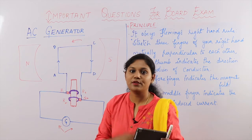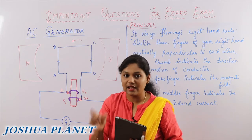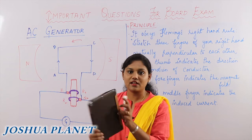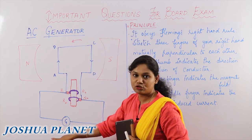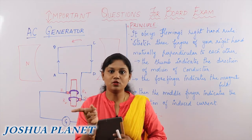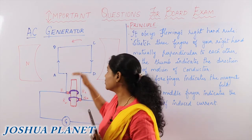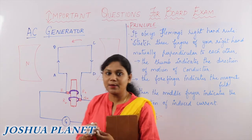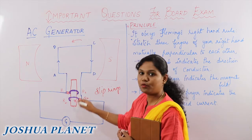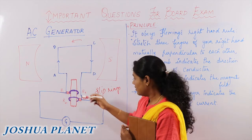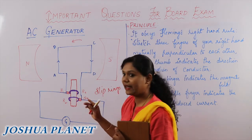In just one complete rotation, one half produces current from one side, the other half produces current from the other side. Therefore the current produced is not uniform — it is alternating. The current changes its direction every half rotation. You can expect a multiple choice question here: in an AC generator, the direction of current changes every half rotation. For one complete rotation, the galvanometer shows two deflections. That's why you call it AC — alternating current — produced by the AC generator using slip rings.